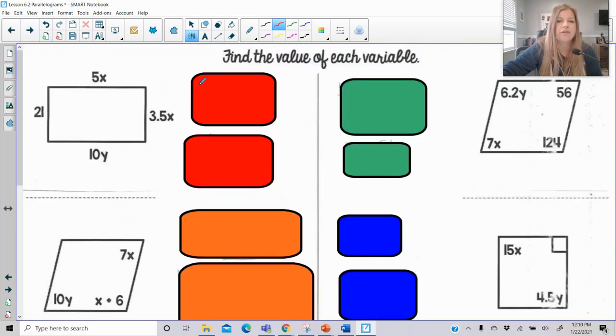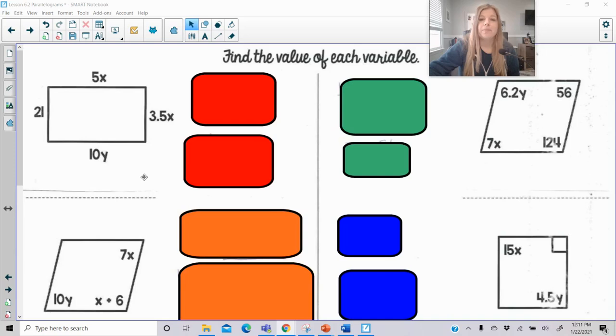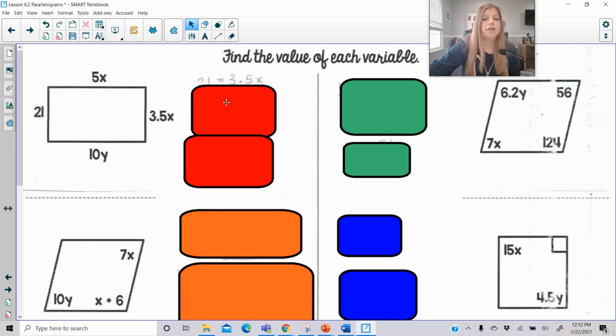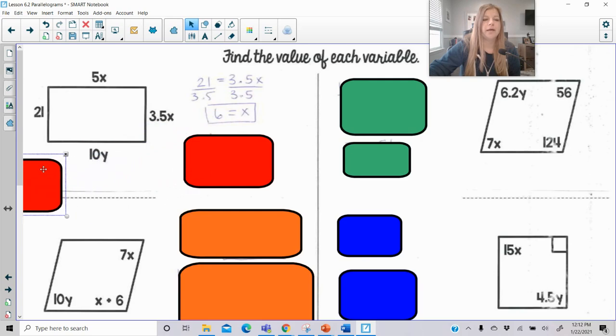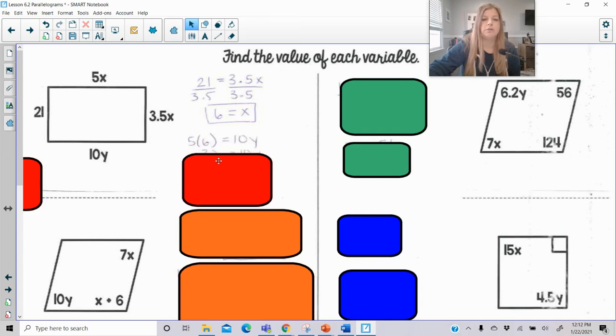Now we're going to take a look at just calculating the value of the variables based on the given information that I just went over about parallelograms. Okay, so what we need to take a look at in the first diagram is that we know if we're given a parallelogram, which all of these are, opposite sides are congruent to each other, so their measures must be equal. So then 21 would be equal to 3.5x, and 5x would be equal to 10y. We just sometimes have to make smart choices. Setting 5x equal to 10y is not really helpful for us because we've got two variables, but I could go ahead and set 21 equal to 3.5x. I would then solve for x and then use that x to substitute in for x into 5x to then set equal to 10y.